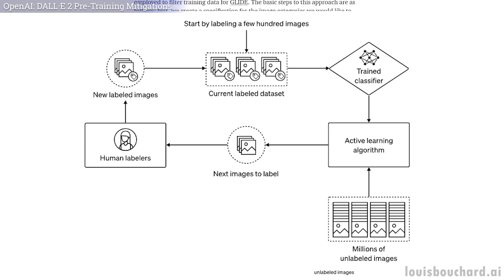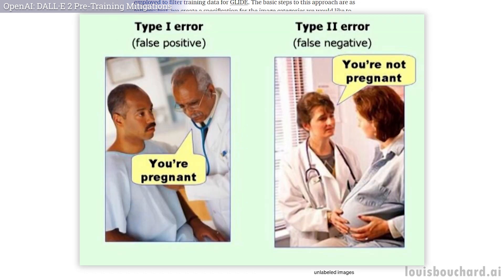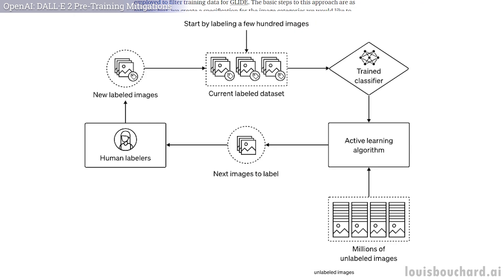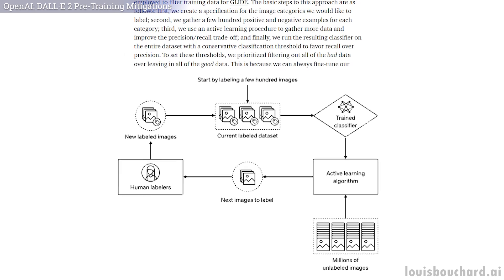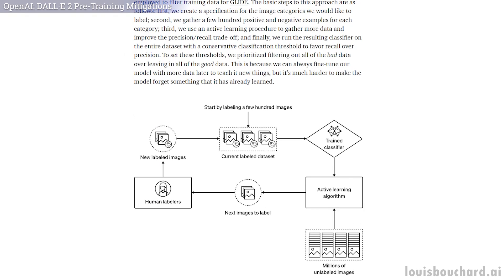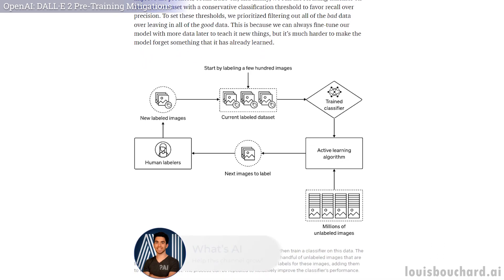Each classifier will have a unique understanding of which content to filter, and will all complement themselves ensuring good filtering — if by good we mean no false negative images going through the filtering process. Still, it comes with downsides. First, the dataset is clearly smaller and may not accurately represent the real world, which may be good or bad depending on the use case.